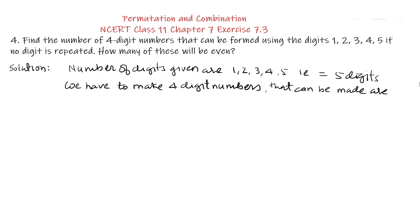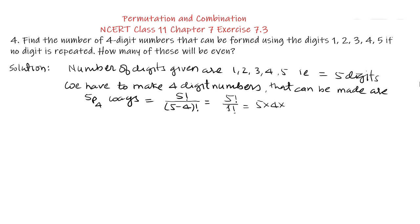We have to make 4-digit numbers. The number of such numbers that can be made is 5P4, which is equal to 5 factorial upon (5 minus 4) factorial, which is 5 factorial upon 1 factorial, equal to 5 × 4 × 3 × 2 × 1 = 120.